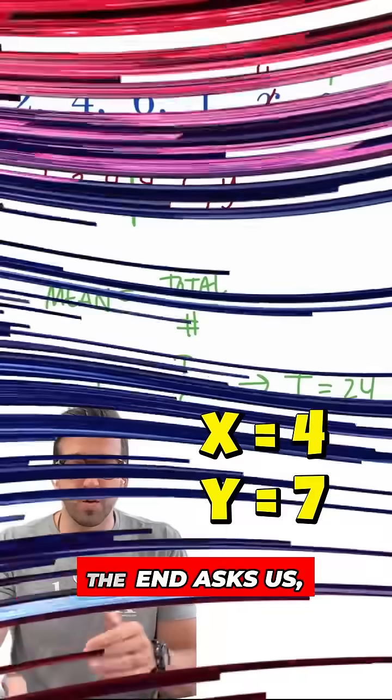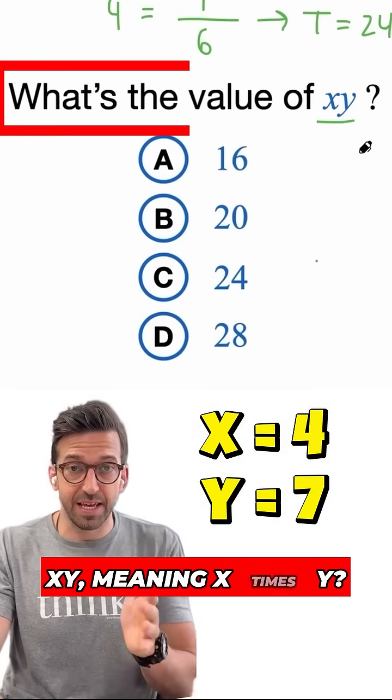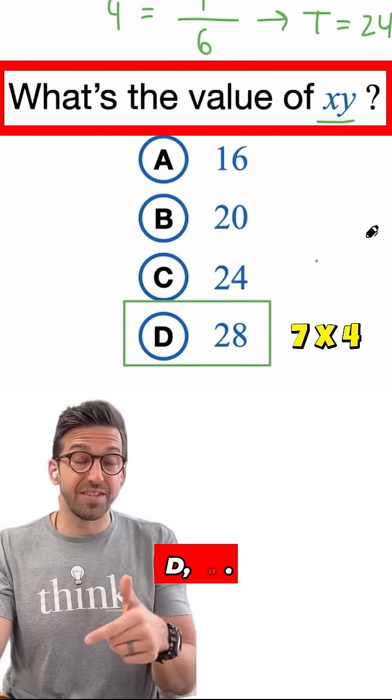And now we've found both x and y. X was four, y was seven. Well, the question at the end asks us, what's the value of xy, meaning x times y? So our answer here is D, 28.